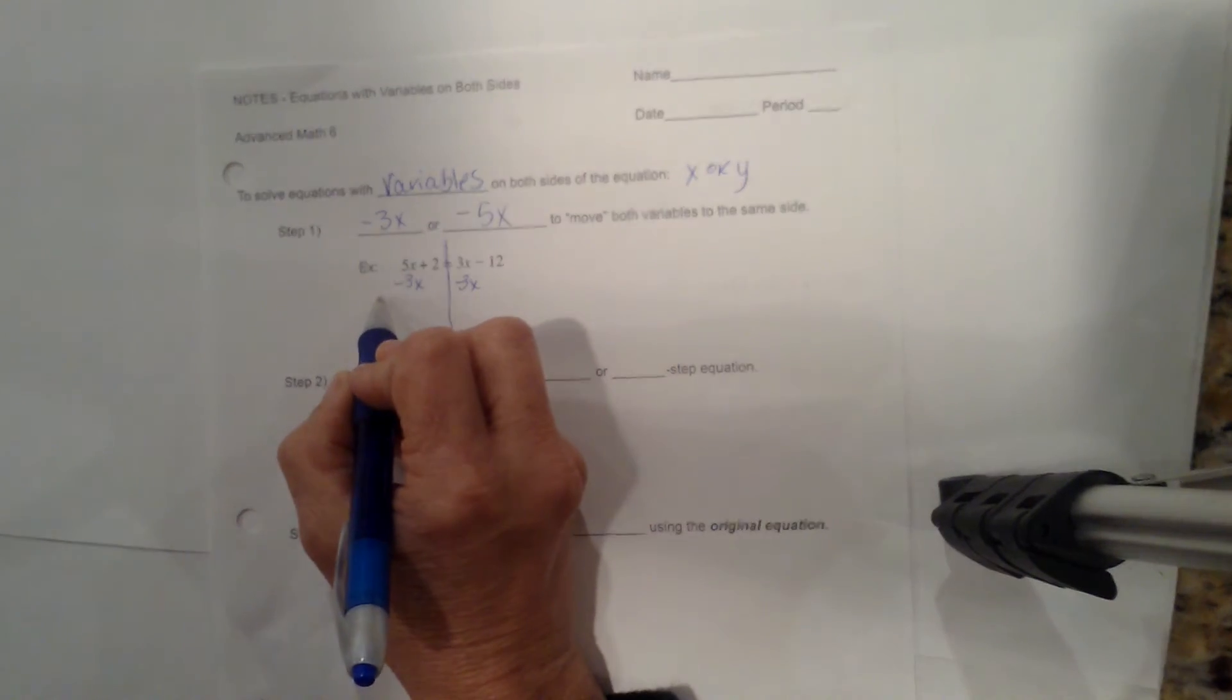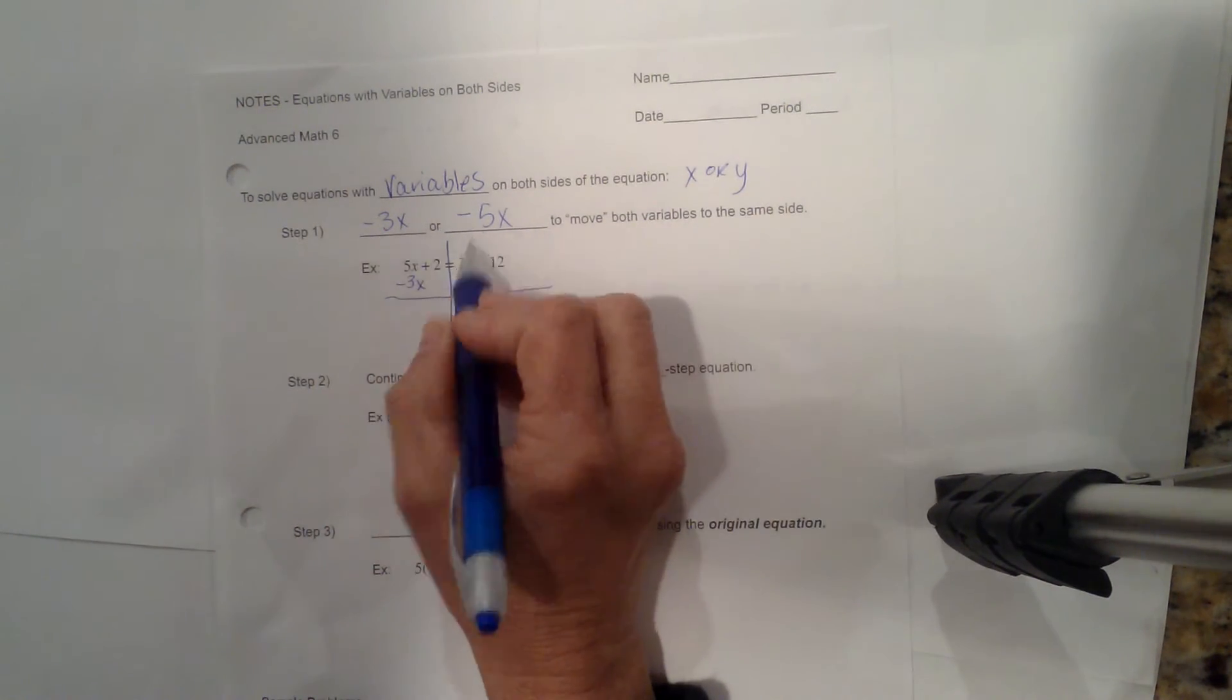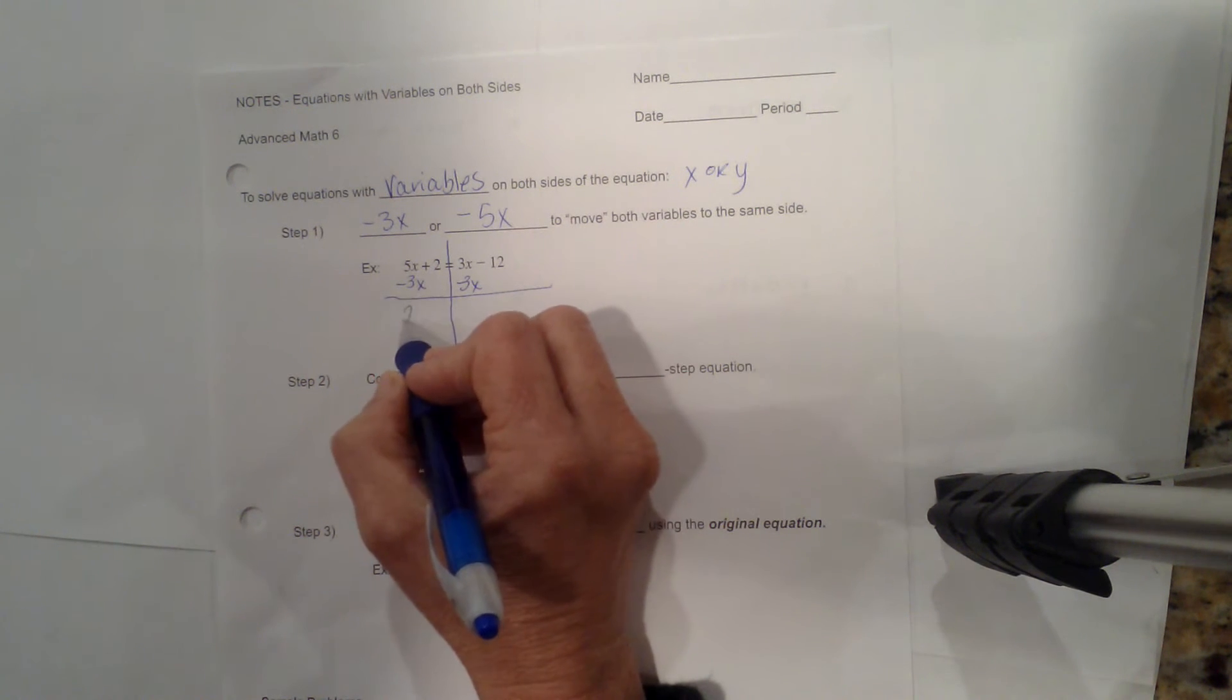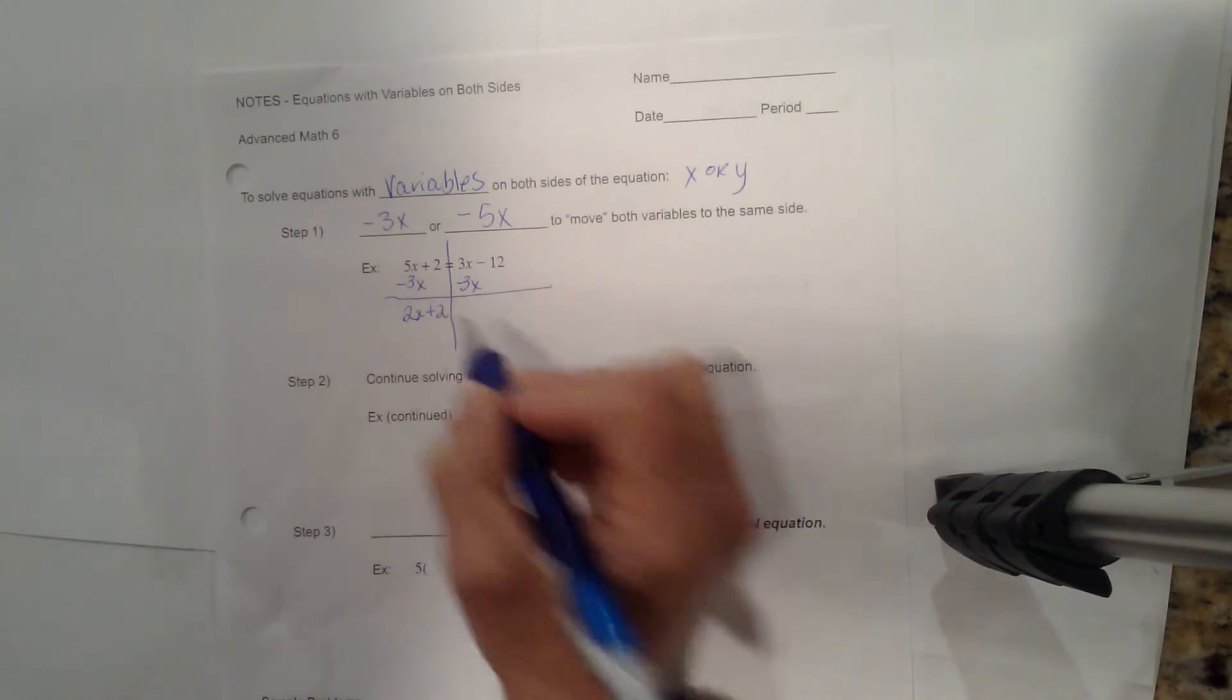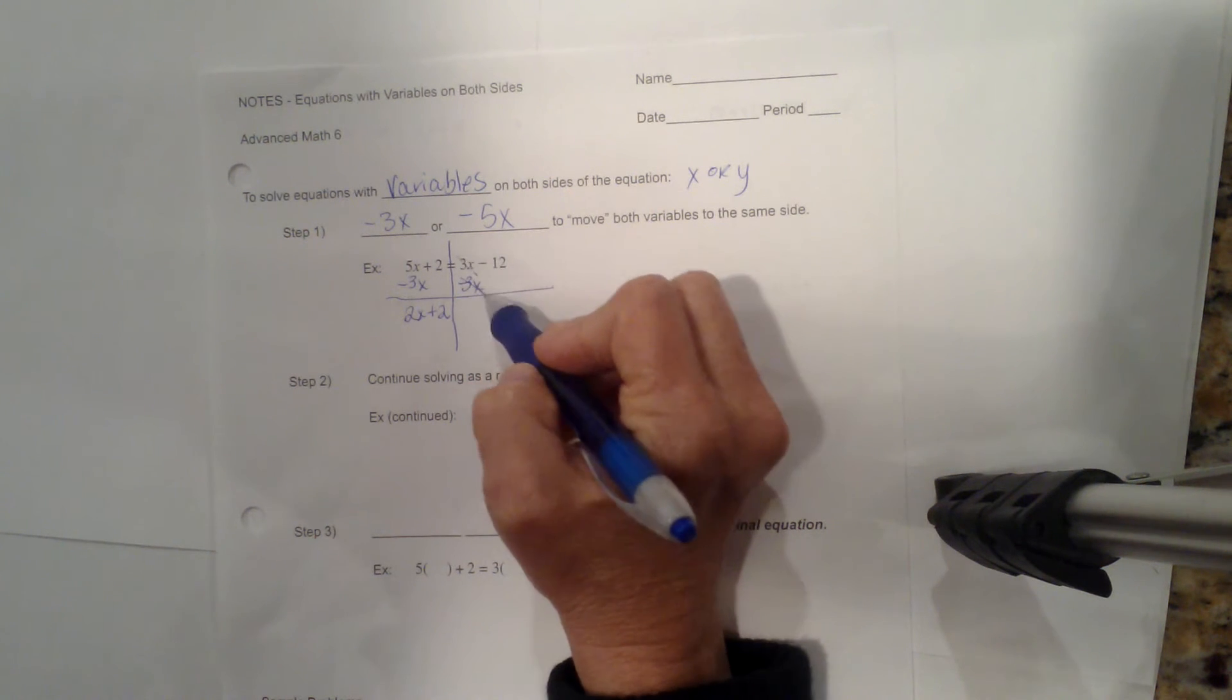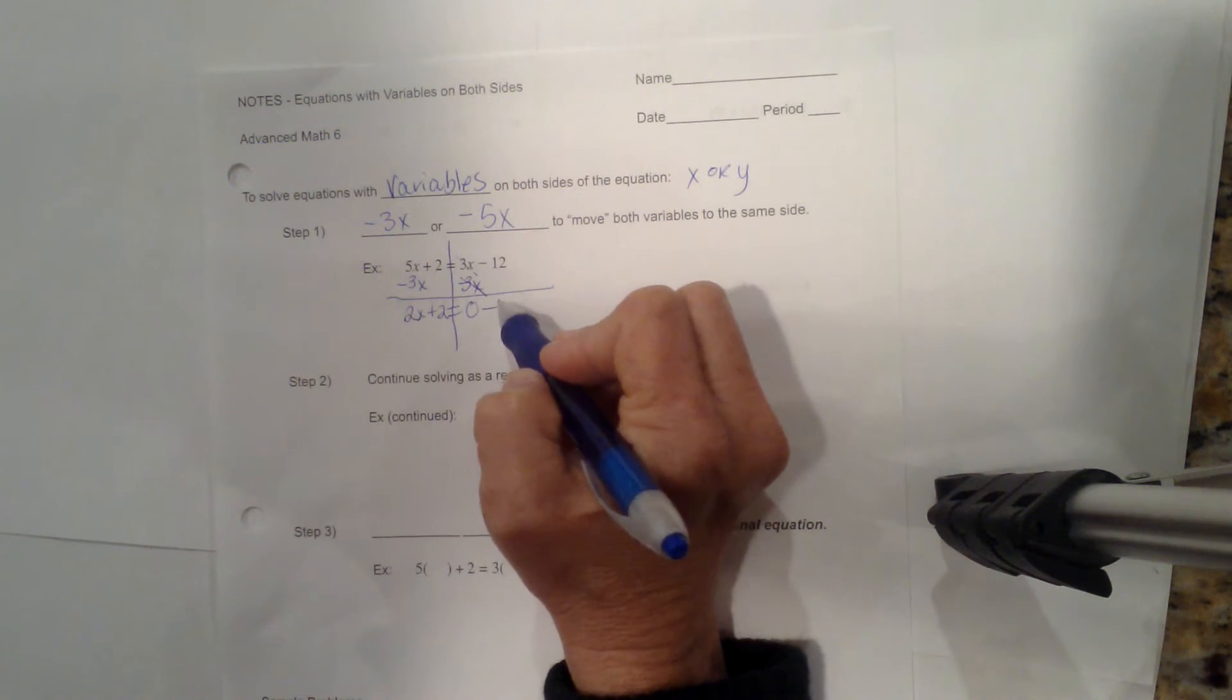So I'm going to draw a line and then I'm just going to add my columns. So 5x minus 3x, that's 2x. I'm going to bring down my positive 2. Now the next column is 3x minus 3x, well that's just 0. So I'm going to bring down a 0 minus 12.